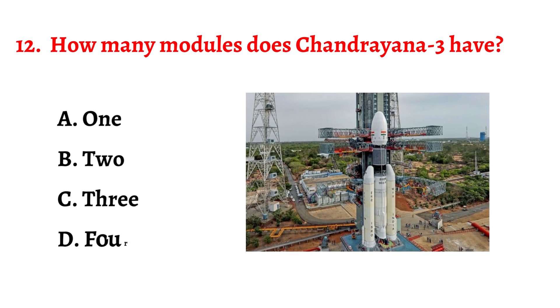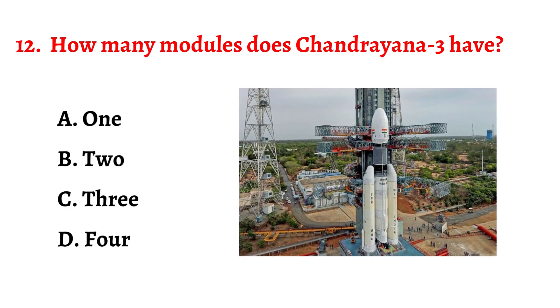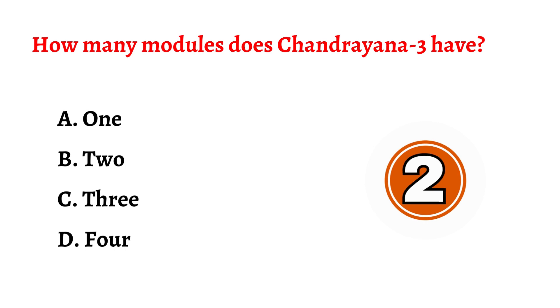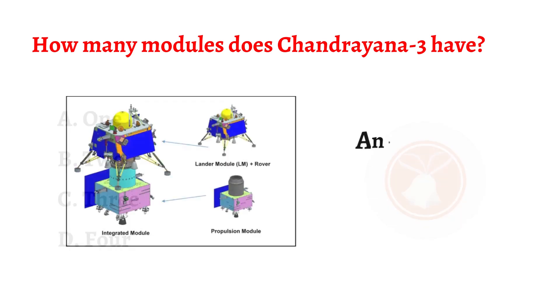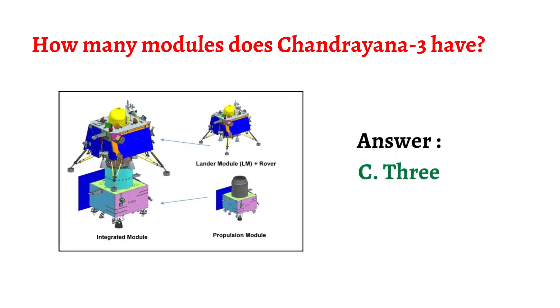Question number twelve: How many modules does Chandrayaan 3 have? The correct answer is option C: three modules.